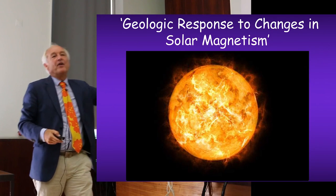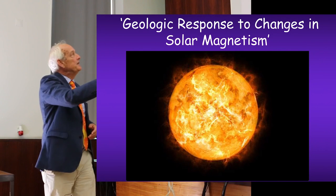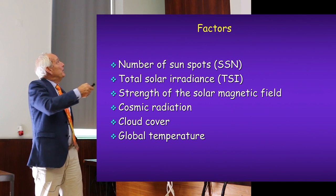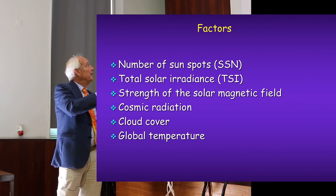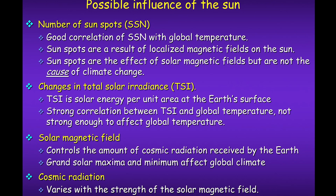The Sun is the mother of everything, changing inside and at the surface. We talk about the number of sunspots, the solar irradiance, strength of the solar magnetic field, cosmic radiation, cloud cover, and global temperature. Sunspots show good correlation with temperature. Sunspots are the result of localization of the magnetic field in the Sun — they are the effect of the solar magnetic field, but not the cause of climate change. The total solar irradiance per unit area at the Earth's surface shows a strong correlation with global temperature, though not strong enough alone to affect global temperature.